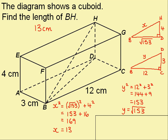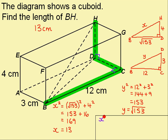Just out of interest, when your three lengths, length, width and height, are all at right angles to each other, then you can use one step to get the answer. You can say that x squared is a squared plus b squared plus c squared.